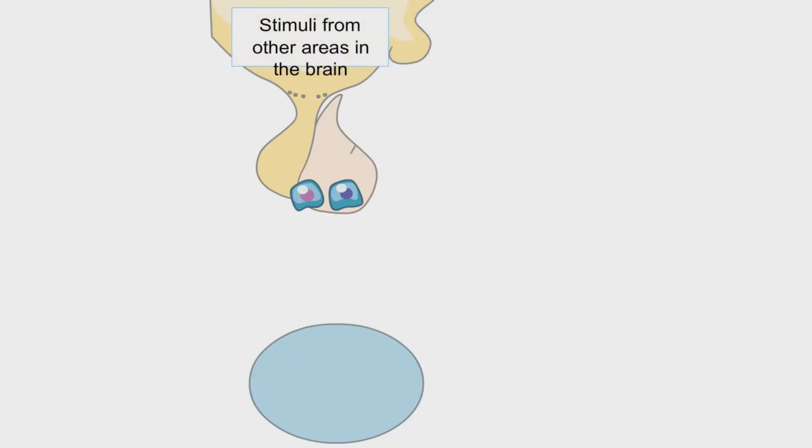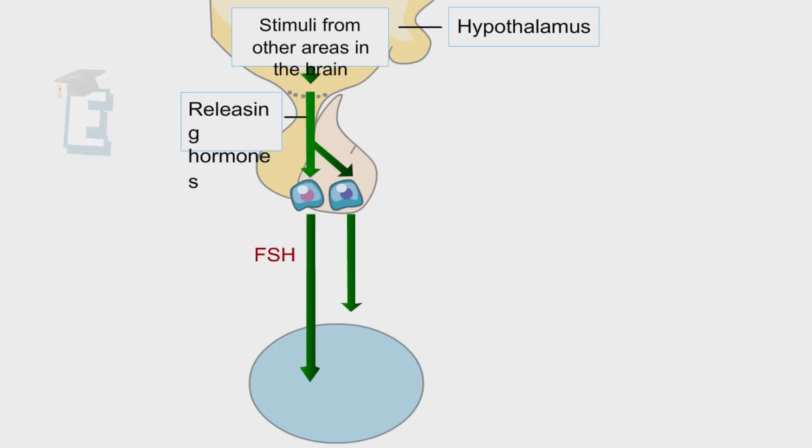Basically, the endocrine system and the reproductive system are related to each other. The hypothalamus gland located in the human brain releases the FSH and LH hormones.